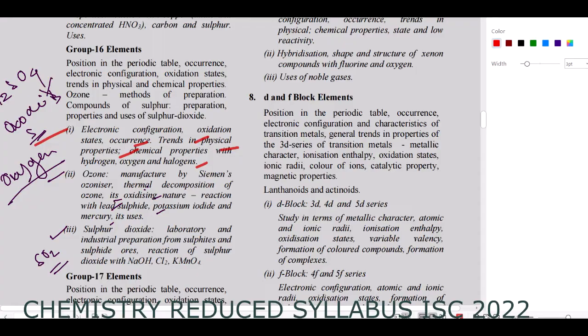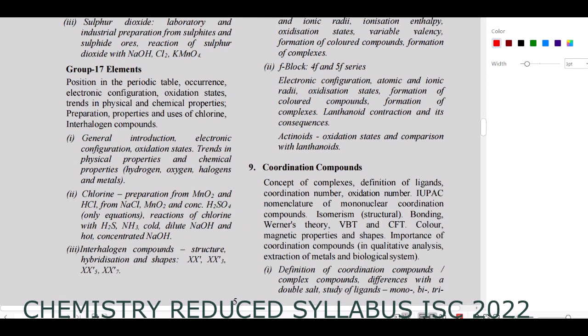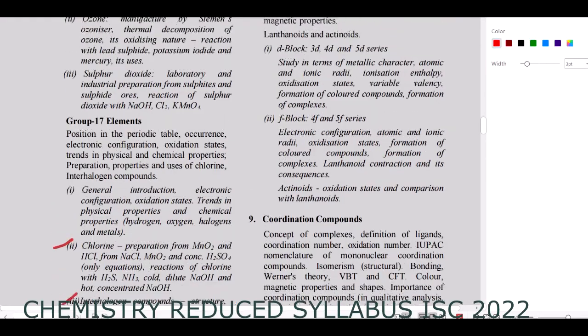For Group 17: general introduction, electronic configuration, physical and chemical properties are present. Chlorine and interhalogen compounds are present. However, hydrochloric acid and the oxo acids of halogens are removed. For Group 16, sulfur as a compound is also removed.